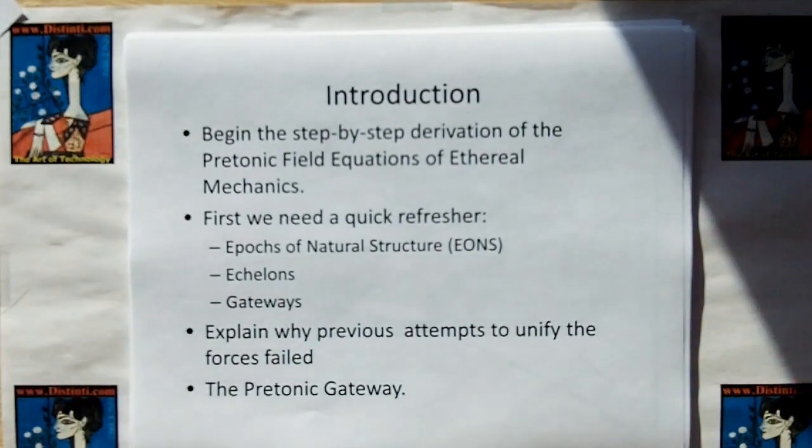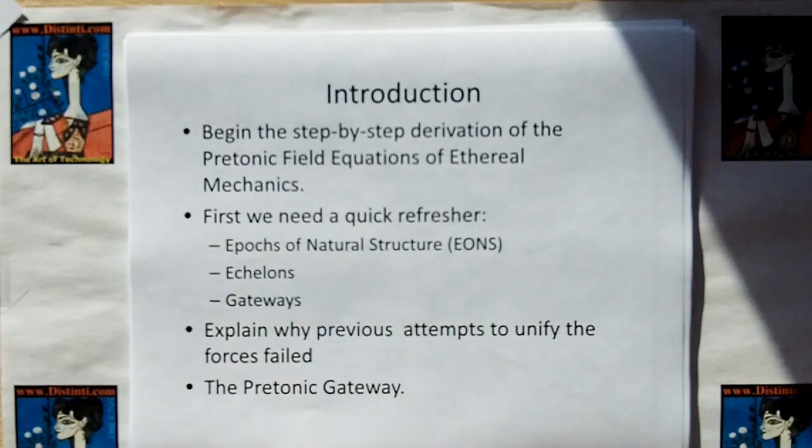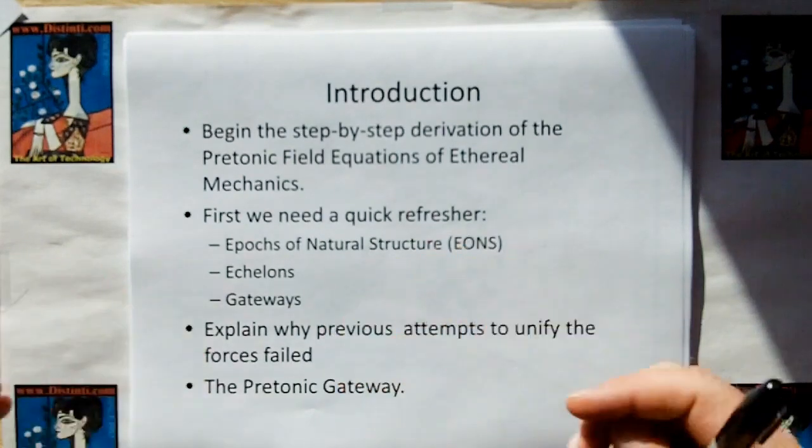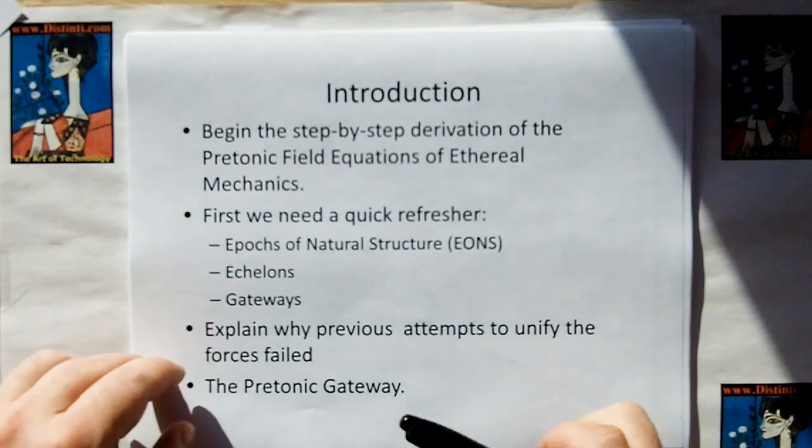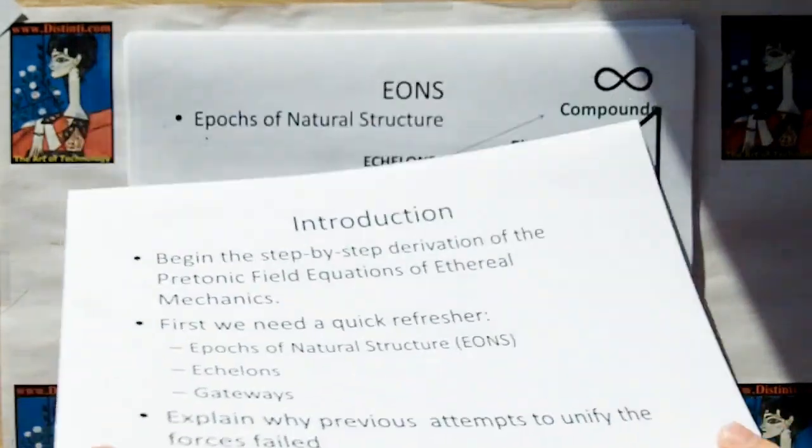What we're going to do here is begin the step-by-step process of the derivation of the Pretonic Field Equations of Ethereal Mechanics. The original name for these was going to be new electromagnetism V5. Since in the past videos, I've renamed them because they're not going to look anything like new electromagnetism. But first, we're going to do some refreshers on stuff, and then we're going to look at why previous attempts to unify the forces failed, and then we're going to get on to the Pretonic Gateway.